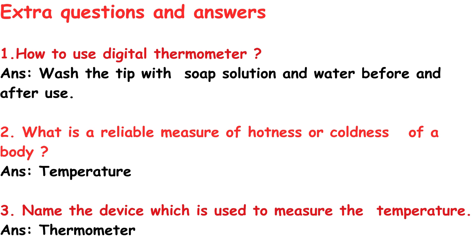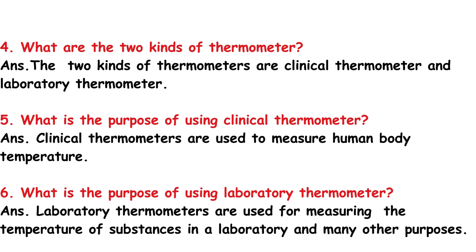Now for extra questions. Question 1: How to use a digital thermometer? Answer: Wash the tip with soap and water before and after use. Question 2: What is a reliable measure of hotness or coldness of a body? Answer: Temperature. Question 3: Name the device used to measure temperature. Answer: Thermometer. Question 4: What are the two kinds of thermometers? Answer: Clinical thermometer and laboratory thermometer.